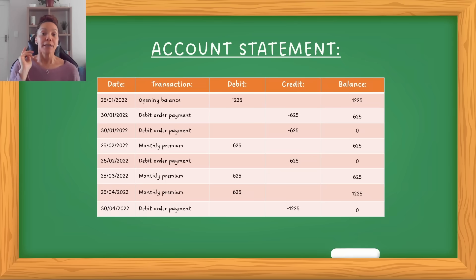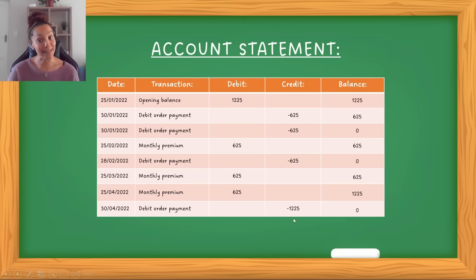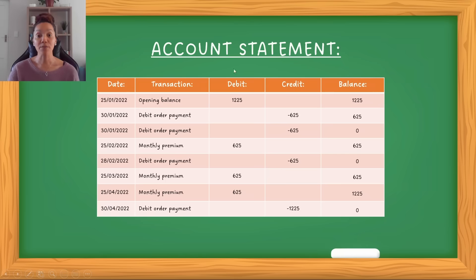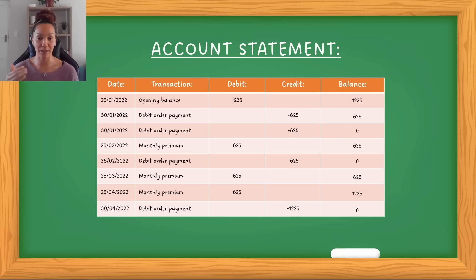So that is really the account statement. How this is different from the bank statement is that the credit values are subtracted here — whereas in a bank statement, if something gets credited, the amount of money increases. And the debit value in the account statement is actually being added, which adds to the total of how much they are owed. So that's really statements and how to interpret and read them.